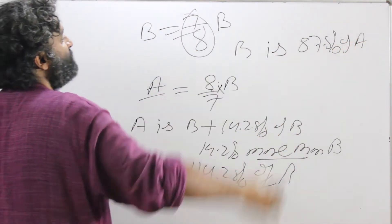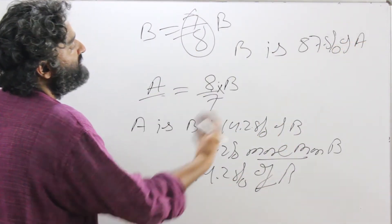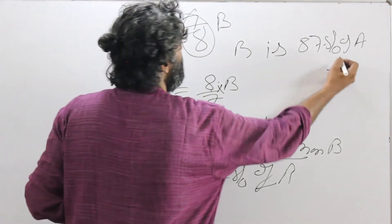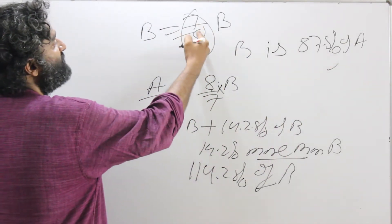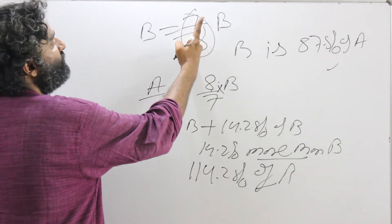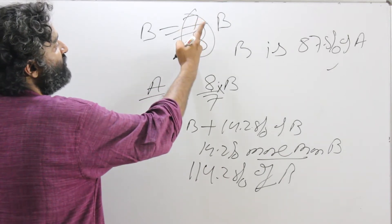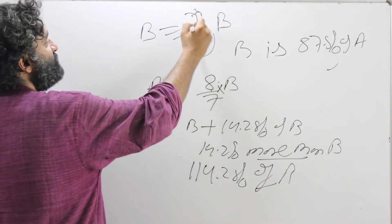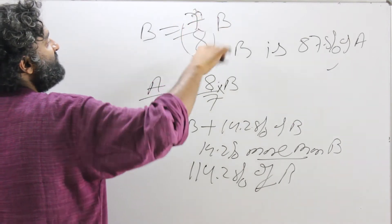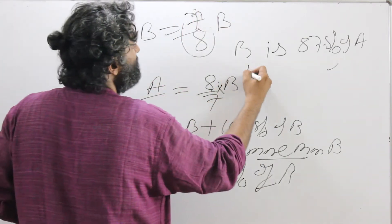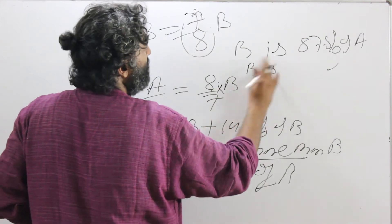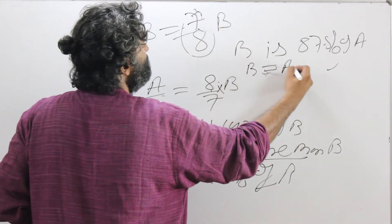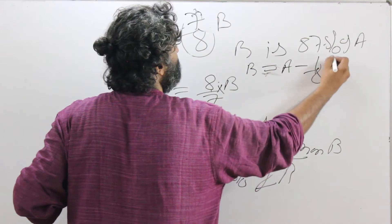B is 87.5% of A. But there could be a 'more than' or 'less than' form also, and I can see here it is less. How much less than the denominator? 1 less than the denominator. Had they been equal they would be 8 by 8, but there is one short, so there is a subtraction of 1 by 8. So I could write it as B is equal to A minus 1 by 8 of A.